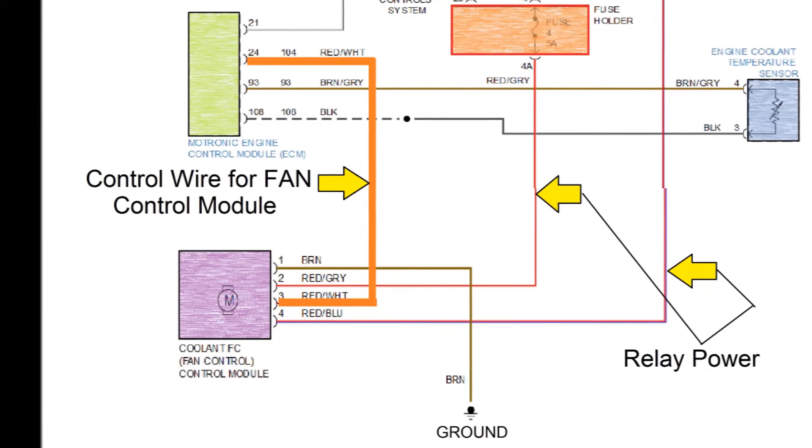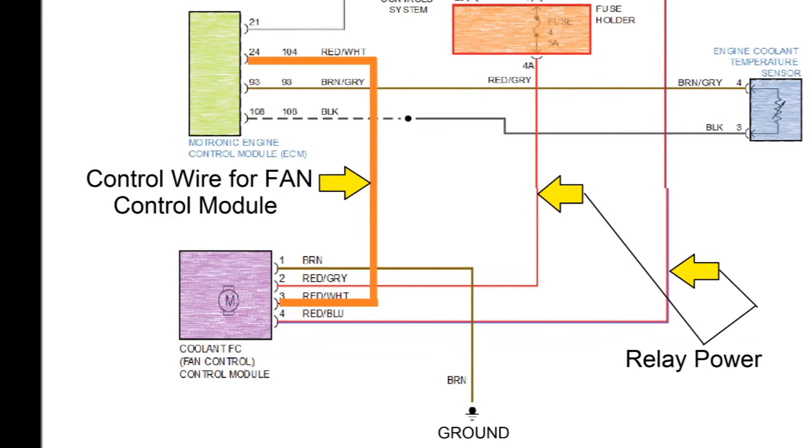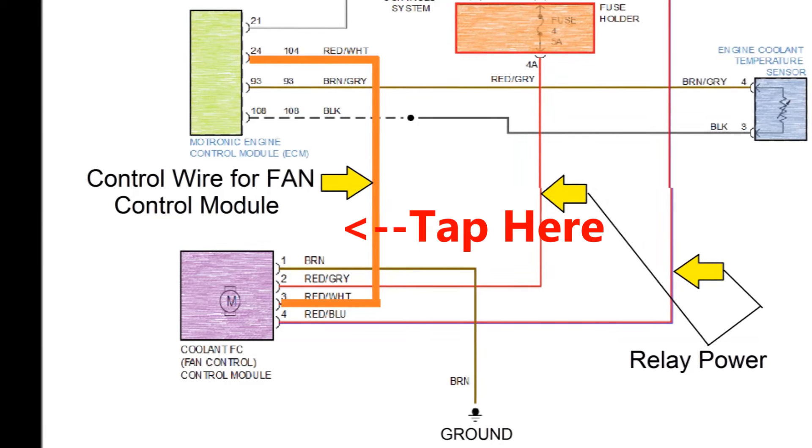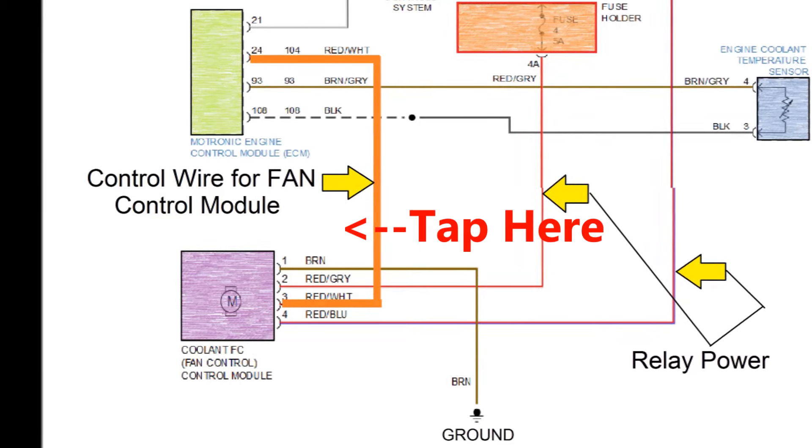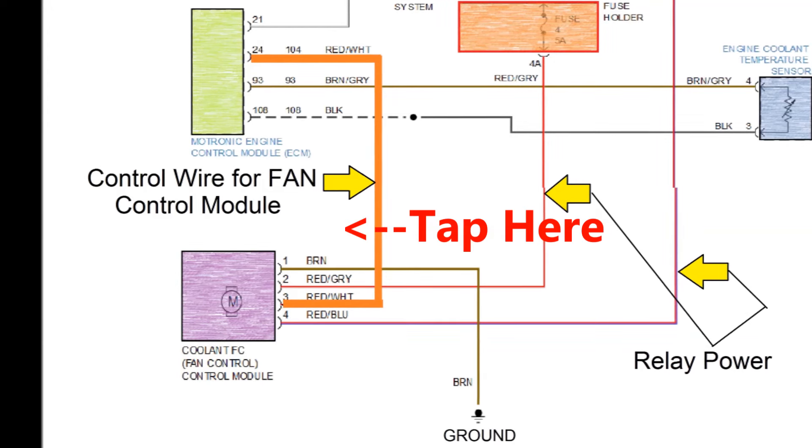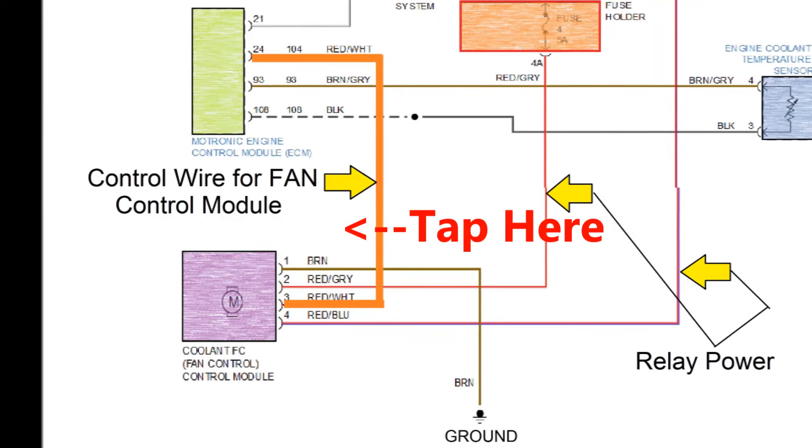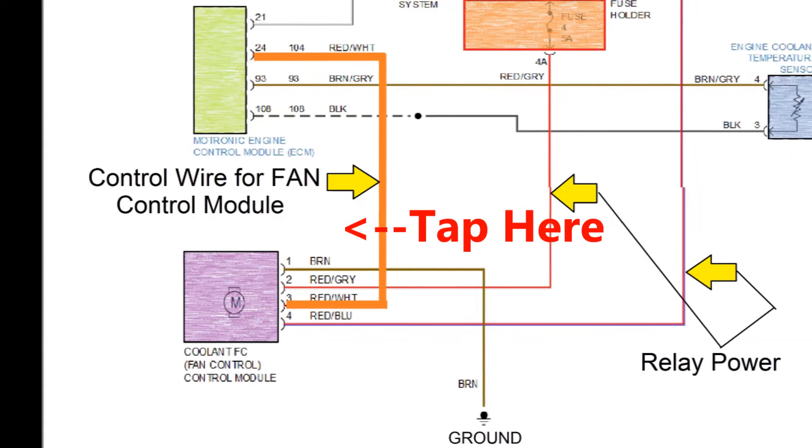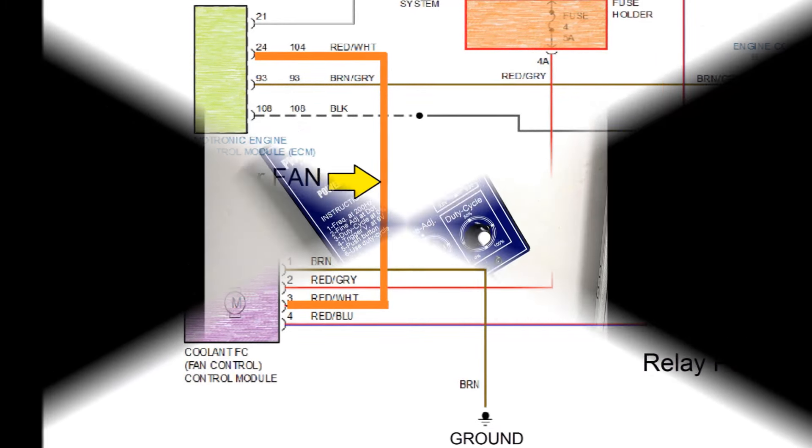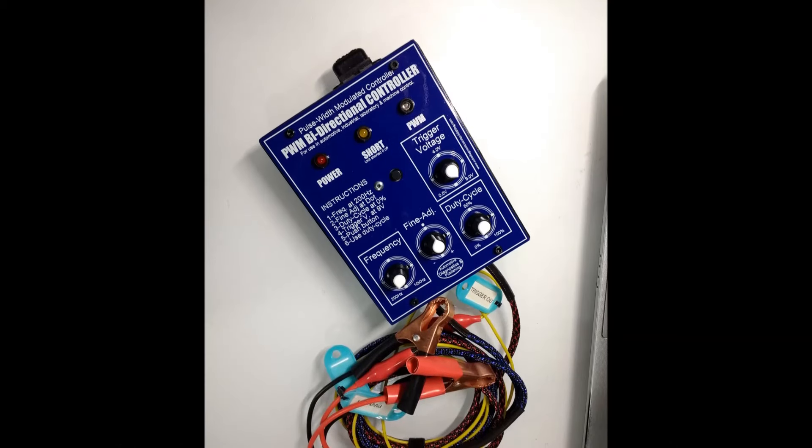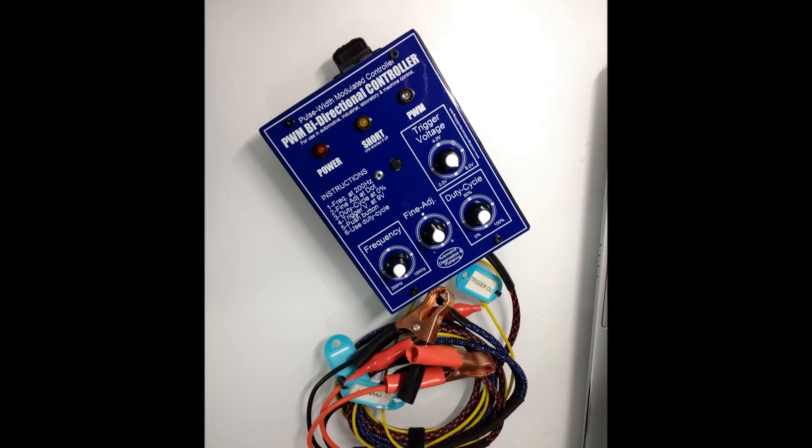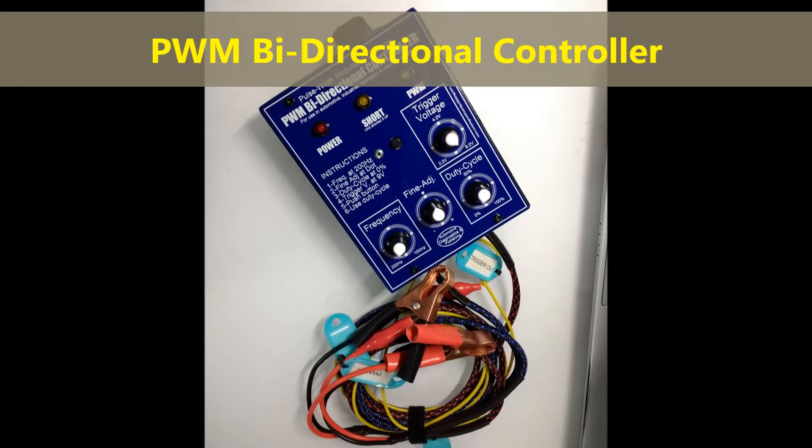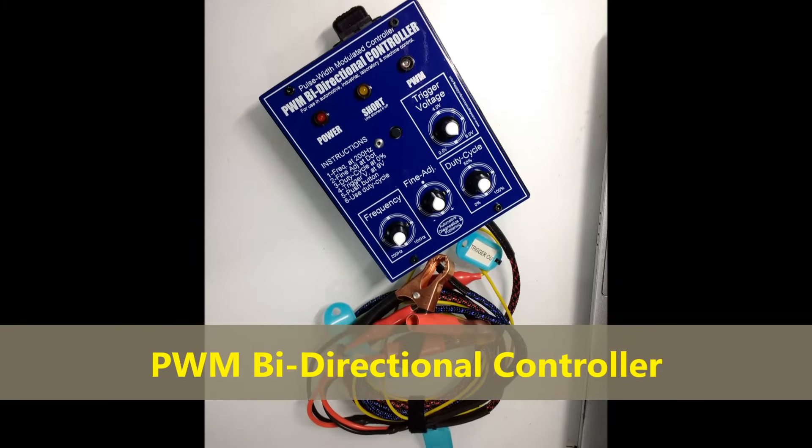Now in order to control this basically what you have to do is go and tap into this particular wire, pin number 3 of the module or pin number which is the same as pin number 24. Now we're going to do this with the PWM bidirectional controller assuming that you don't have a scan tool that actually has this capability. Often times you don't, so basically you're going to use the PWM bidirectional controller that we have and this is a unit that we make, you can find it on our website.